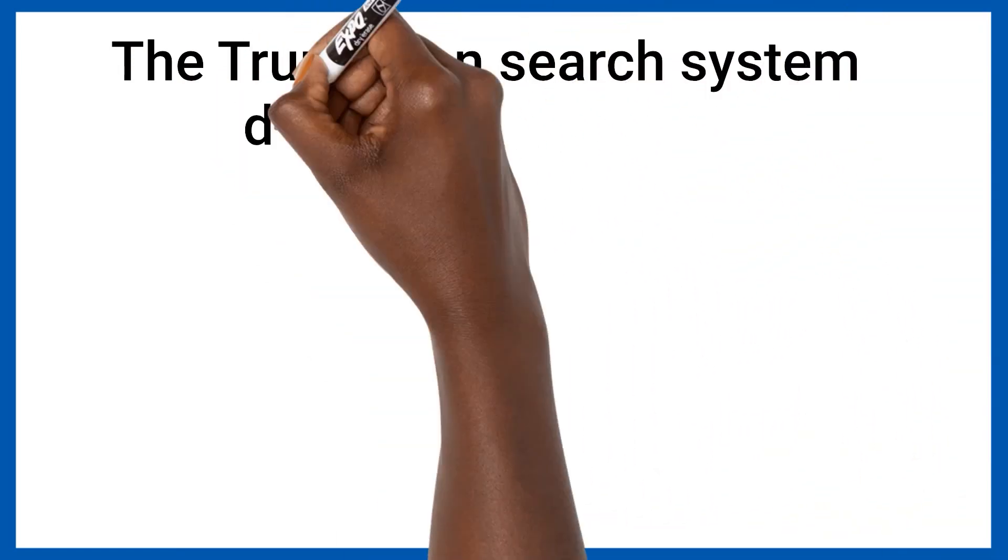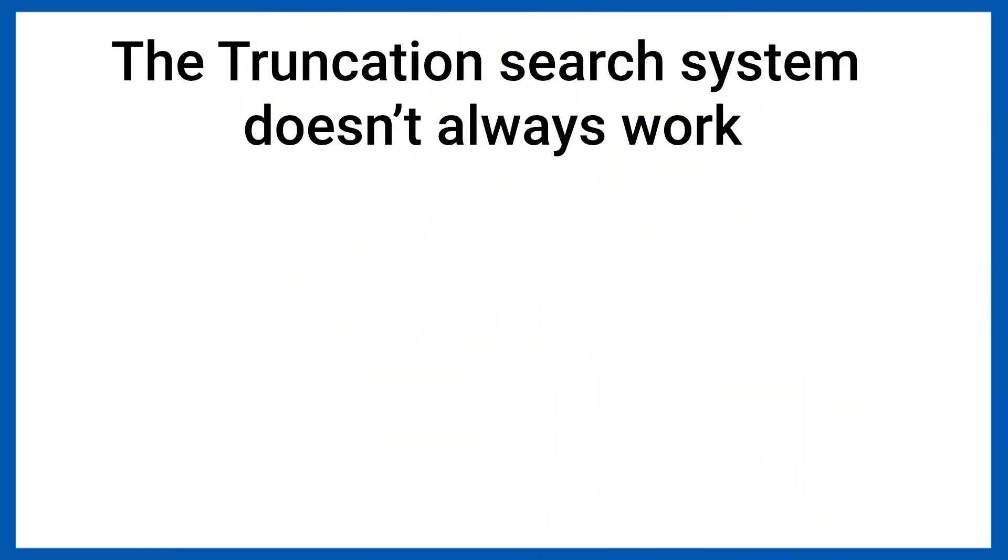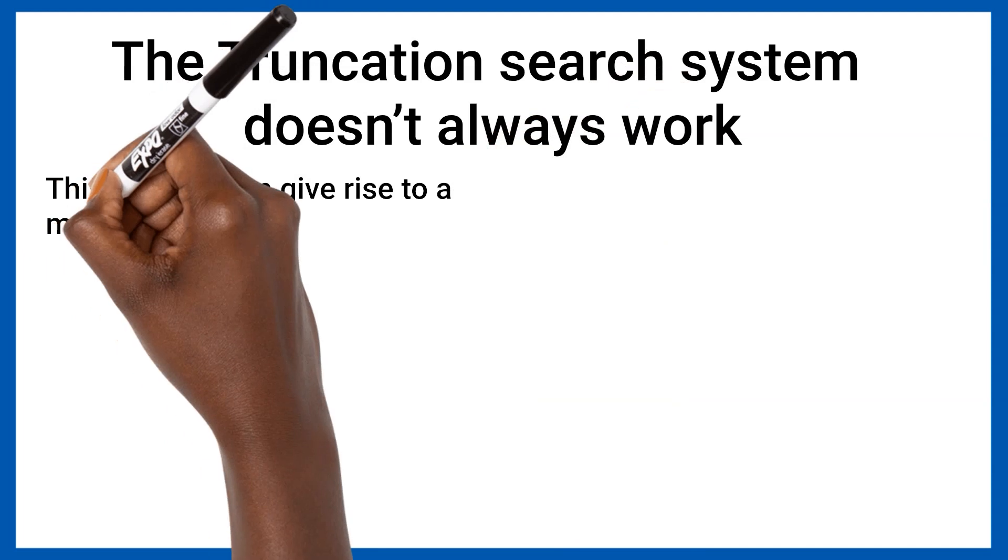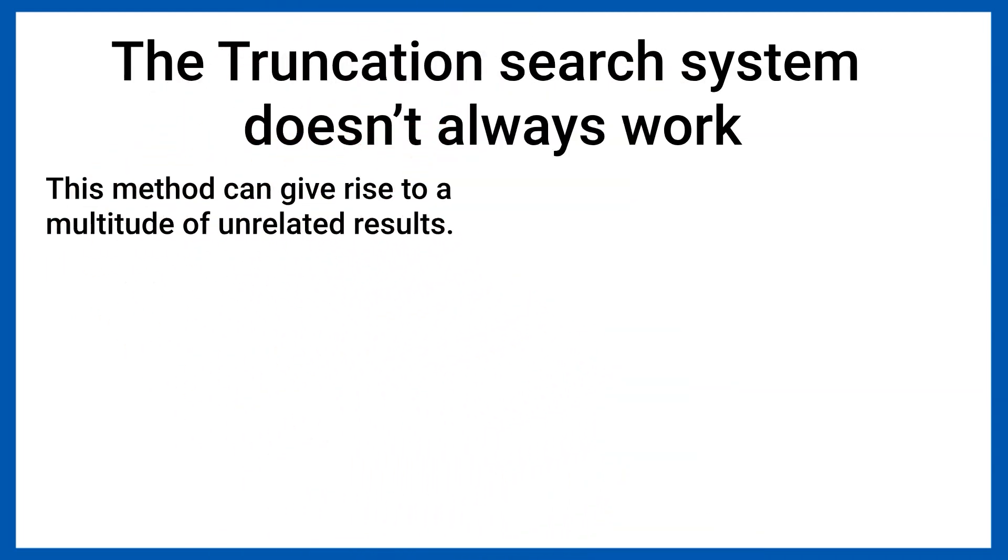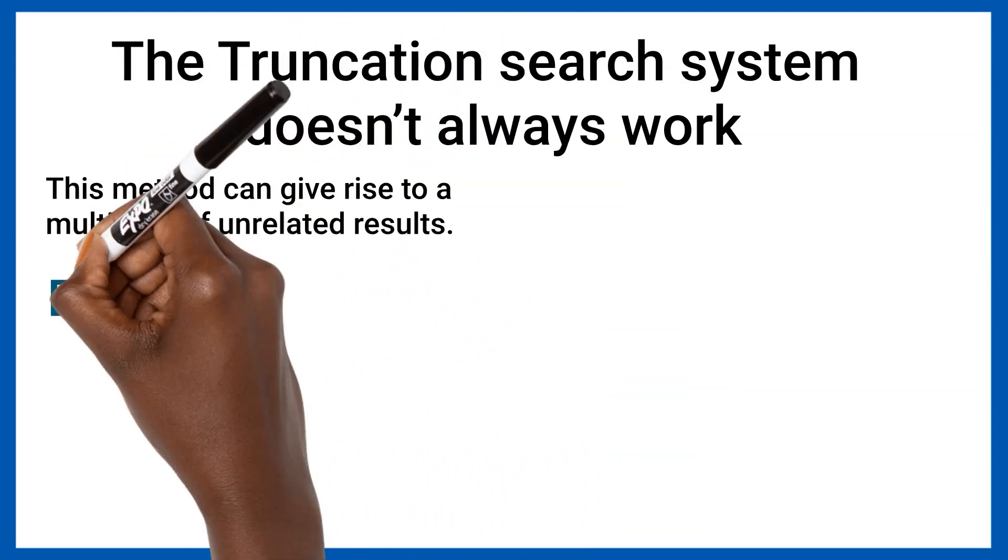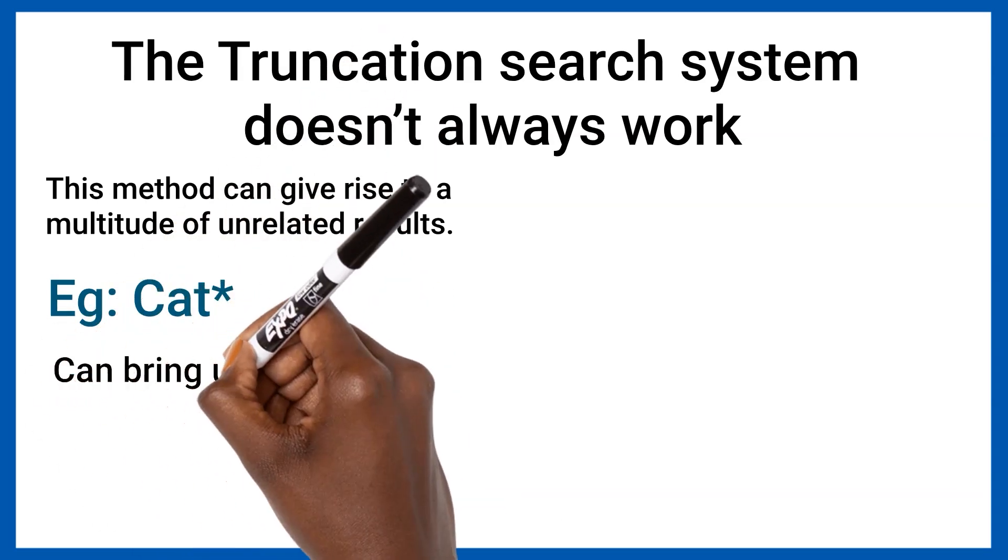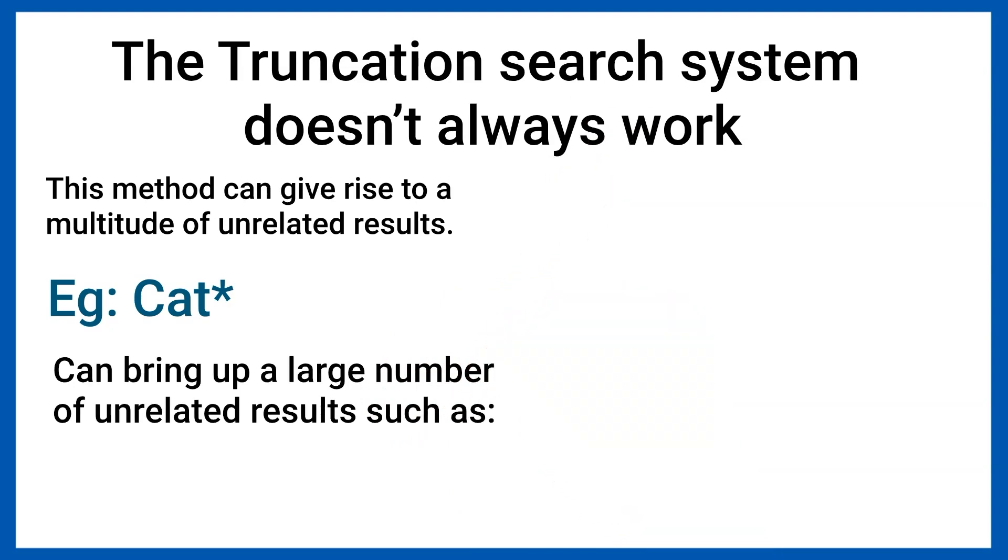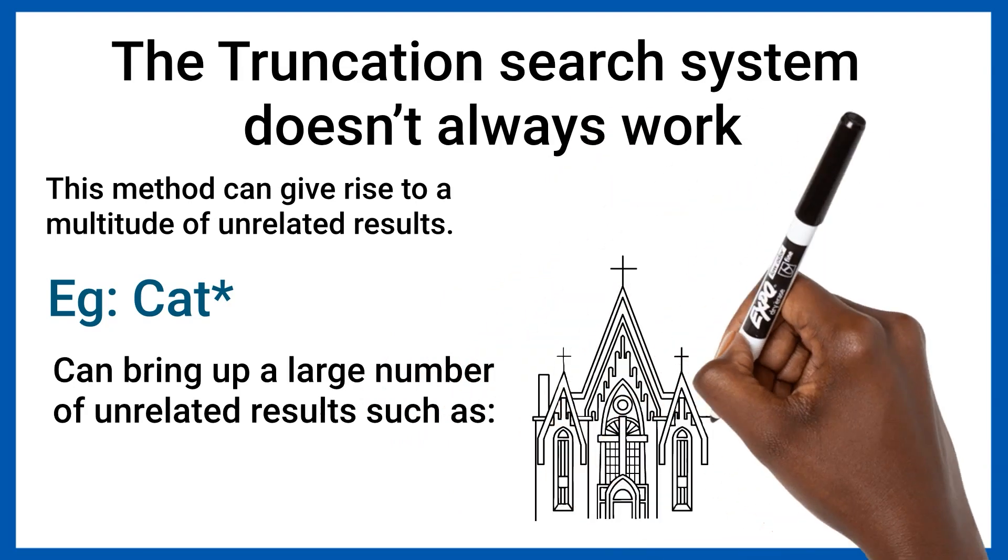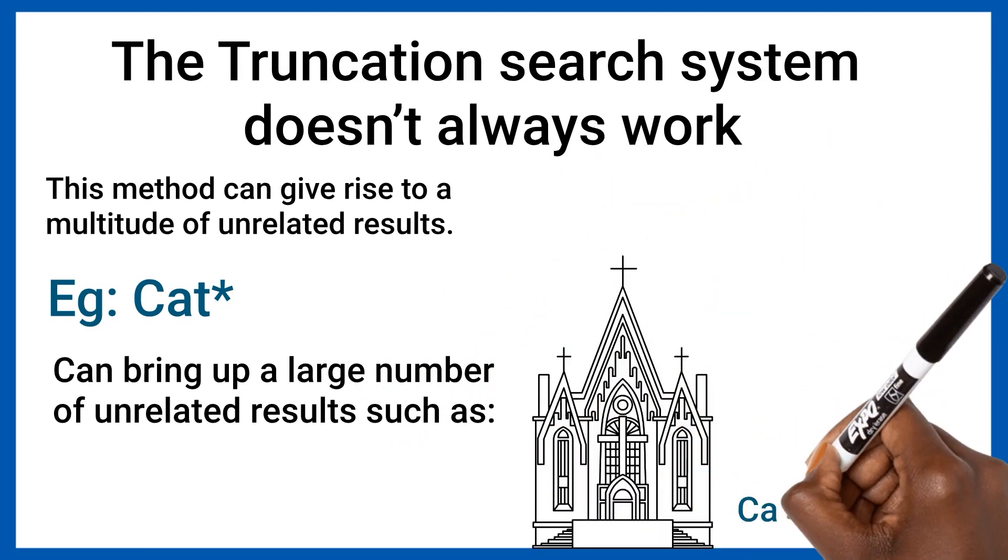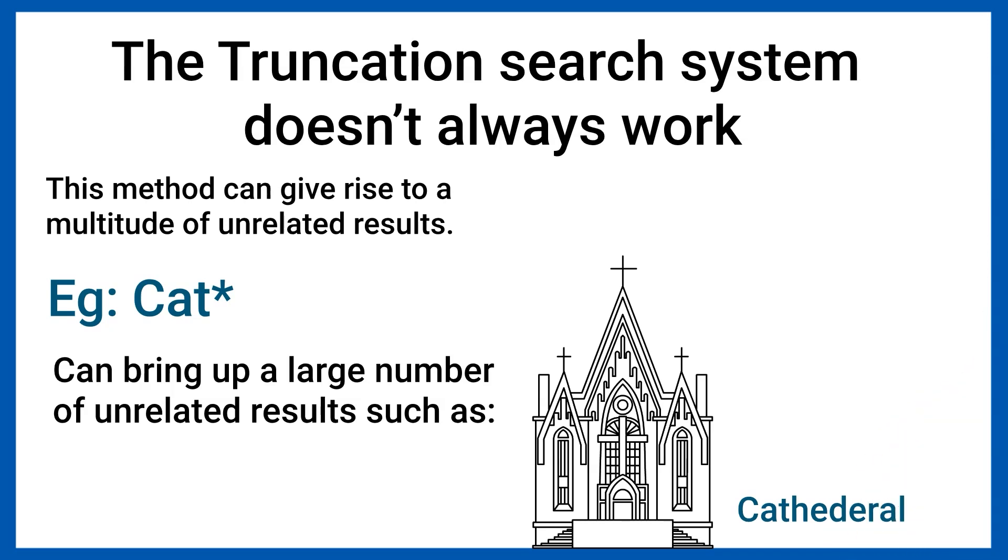It is important to remember that the truncation search system does not always work. This method of searching can give rise to a multitude of unrelated results. For example, searching for the root word cat with a truncation symbol can bring up a large number of unrelated results such as caterpillar, cathedral, catwalk, catcall, catering and more.